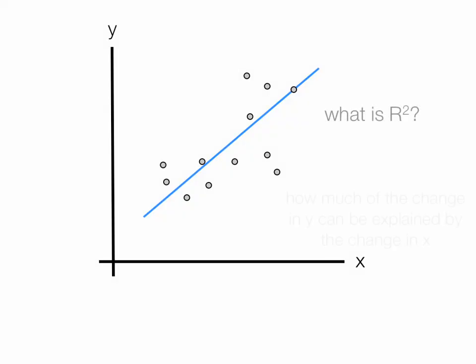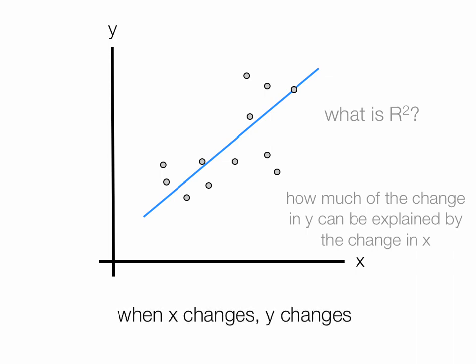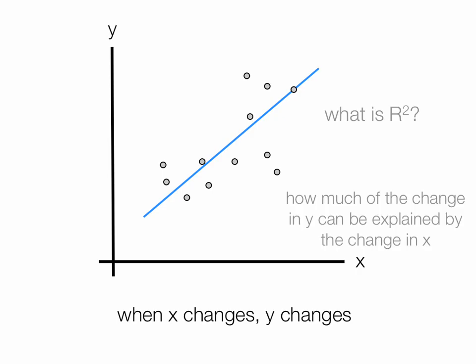So what is R squared? How much of the change in Y can be explained by the change in X? When X changes, Y changes. And we try to measure what R squared is, is by how much? R is more or less different from R squared. Since it measures the relationship, R squared tries to measure the intensity. R squared, simply by squaring R, and it moves from 0 to 1.